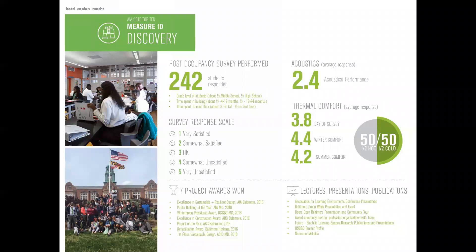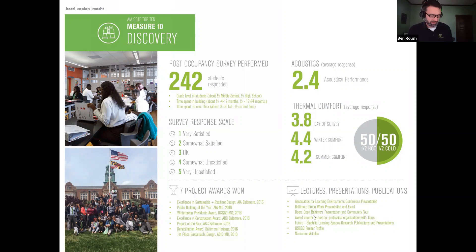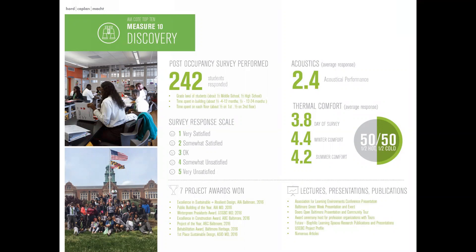For change, the team created a timeline showing the building's history: it was an existing high school, closed in 1985, sat vacant for 30 years, then construction started and it achieved LEED Platinum, thinking ahead for future generations. They talked about community resiliency and how the PV panels could allow the school to function without power — though this can't actually happen while still connected to the grid. For discovery, a post-occupancy survey received 242 student responses using a smiley-face scale. When 20% of people were dissatisfied and asked why, 50% were hot and 50% were cold, which ASHRAE 55 says is actually doing your job correctly.